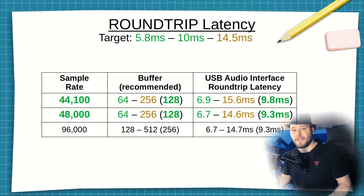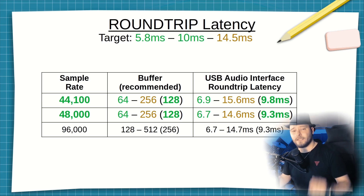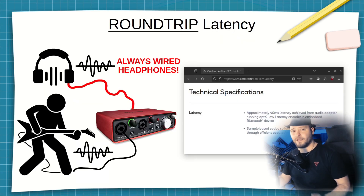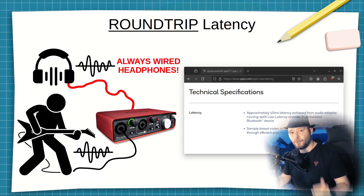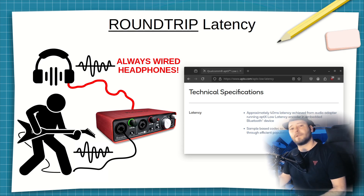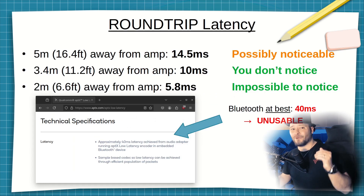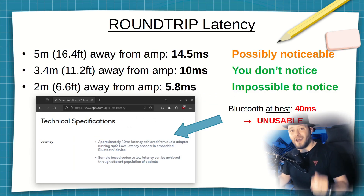One last piece of advice: using these settings, if you still experience noticeable latency — for the love of God, do not use anything wireless, especially headphones. The technical specifications of the latest Bluetooth aptX Low Latency encoder state that approximately 40 milliseconds of latency can be achieved. So even the latest and greatest Bluetooth is unusable at best.